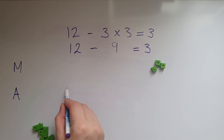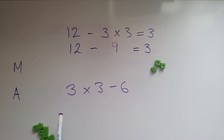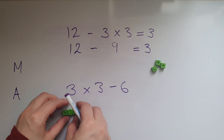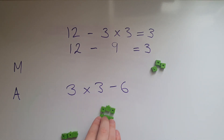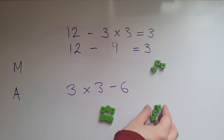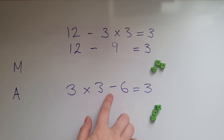Let's try another example: 3 times 3 take away 6. Let's represent this — 3 lots of 3. We've taken away 6 from this, and what we have left is just 3. Again, we did the multiplication first because it's 3 lots of 3, and then just taking away 6 from that. So multiplication comes before subtraction.